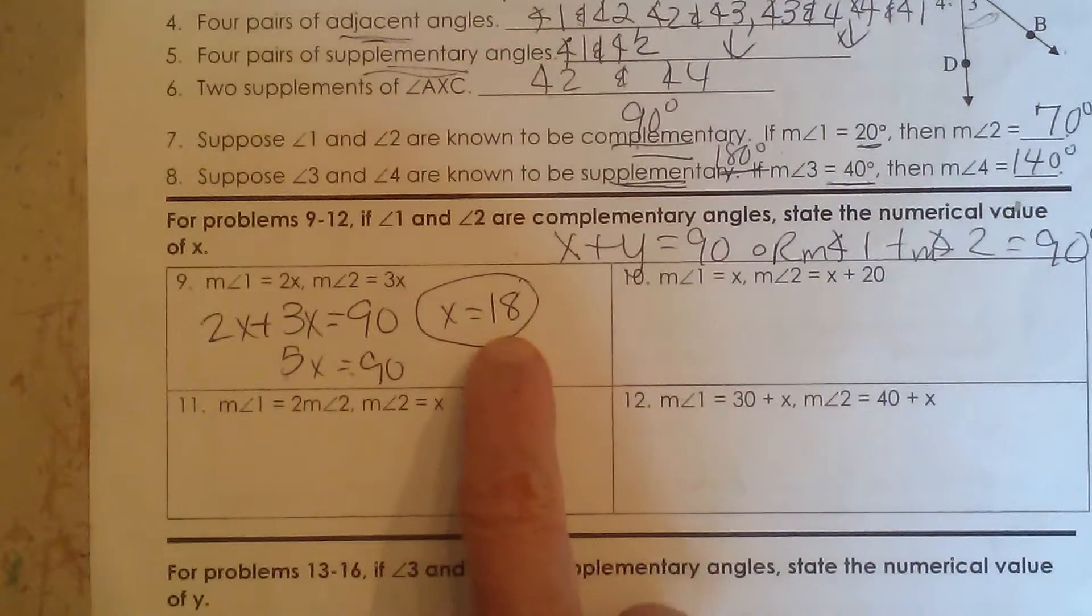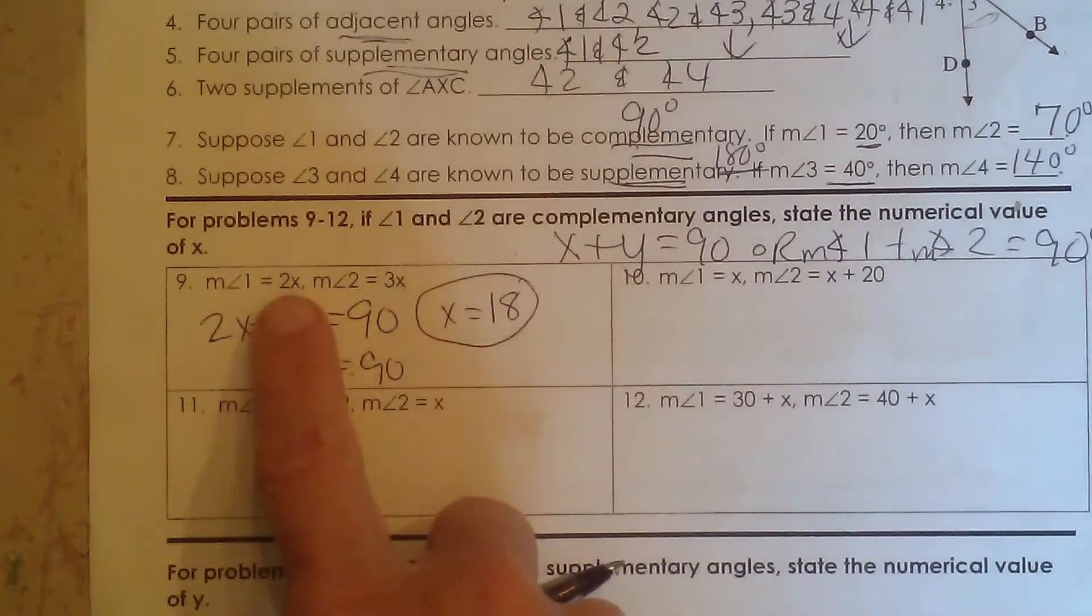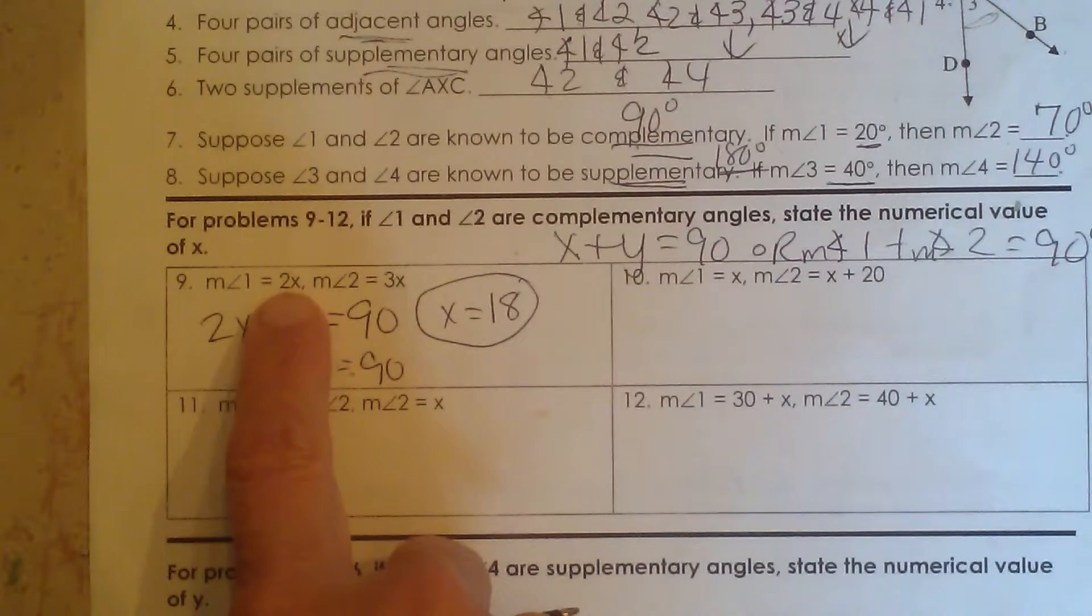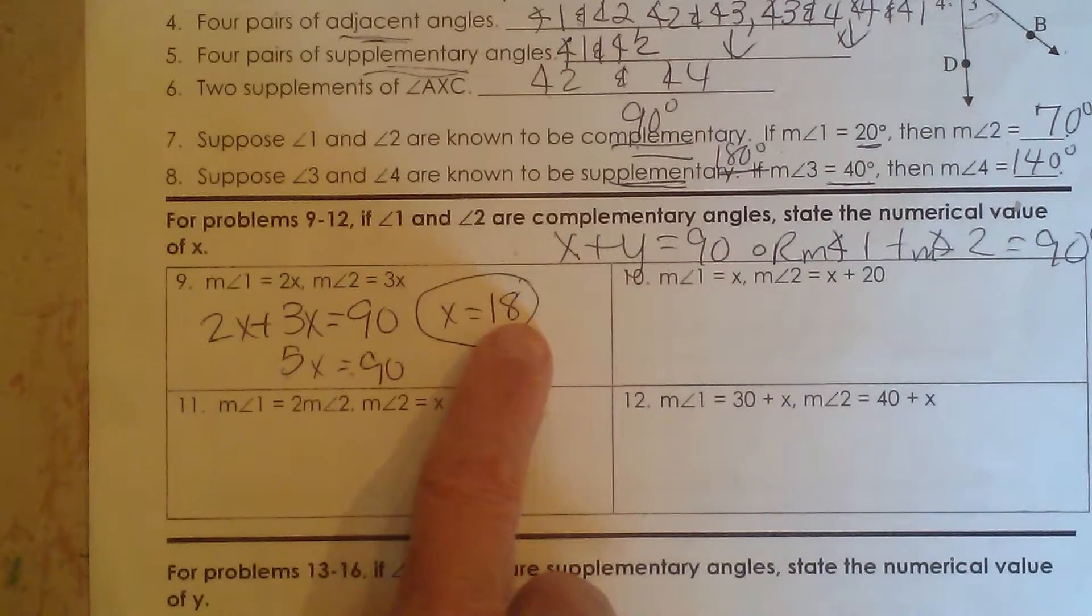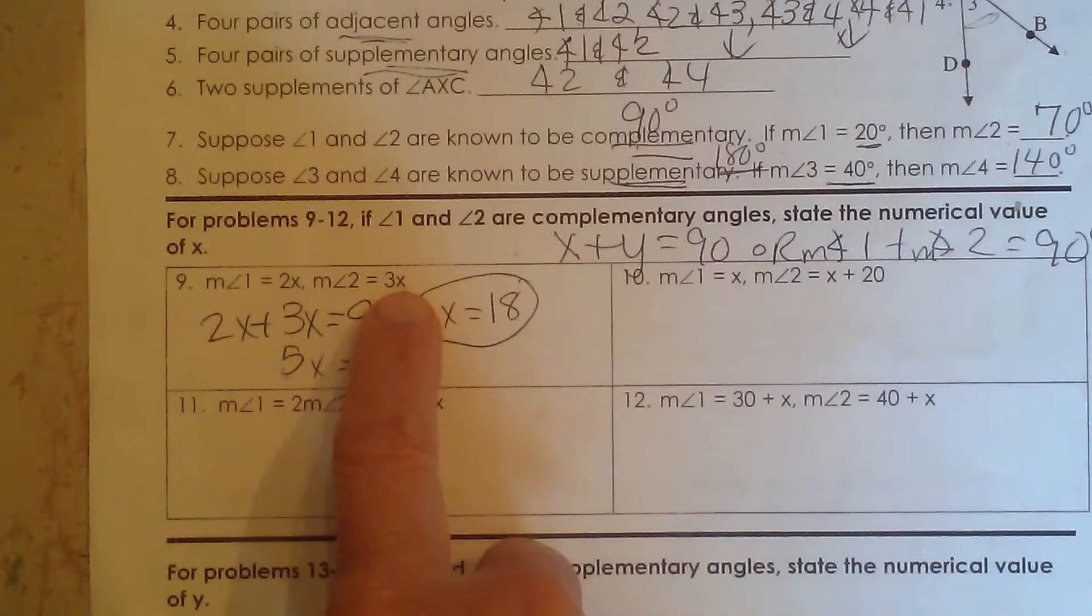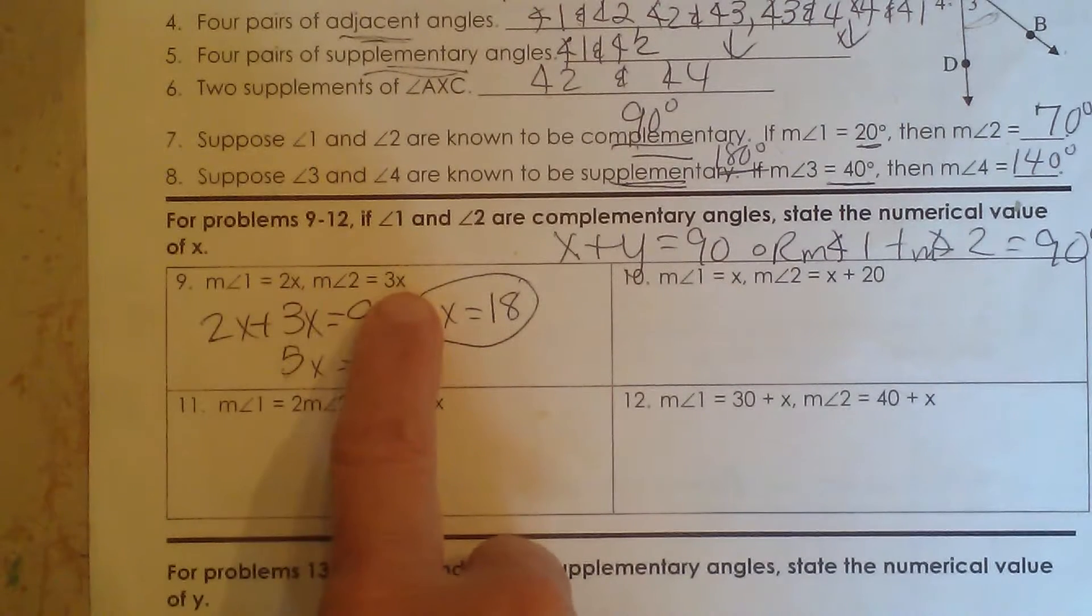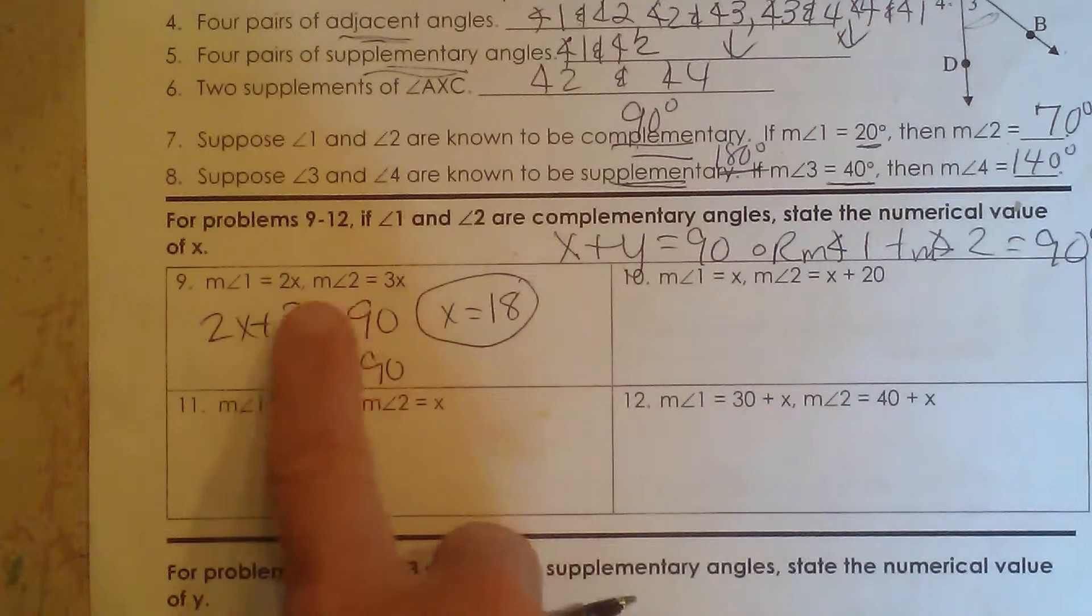Now if you were asked to find the measure of angle 1, we would just plug 18 in to 2x and we would get 36. And if we needed to find the measure of angle 2, we would plug 18 into 3x and we would get 54. And you can double check that. What's 36 plus 54? Well those add to 90. So that is correct.